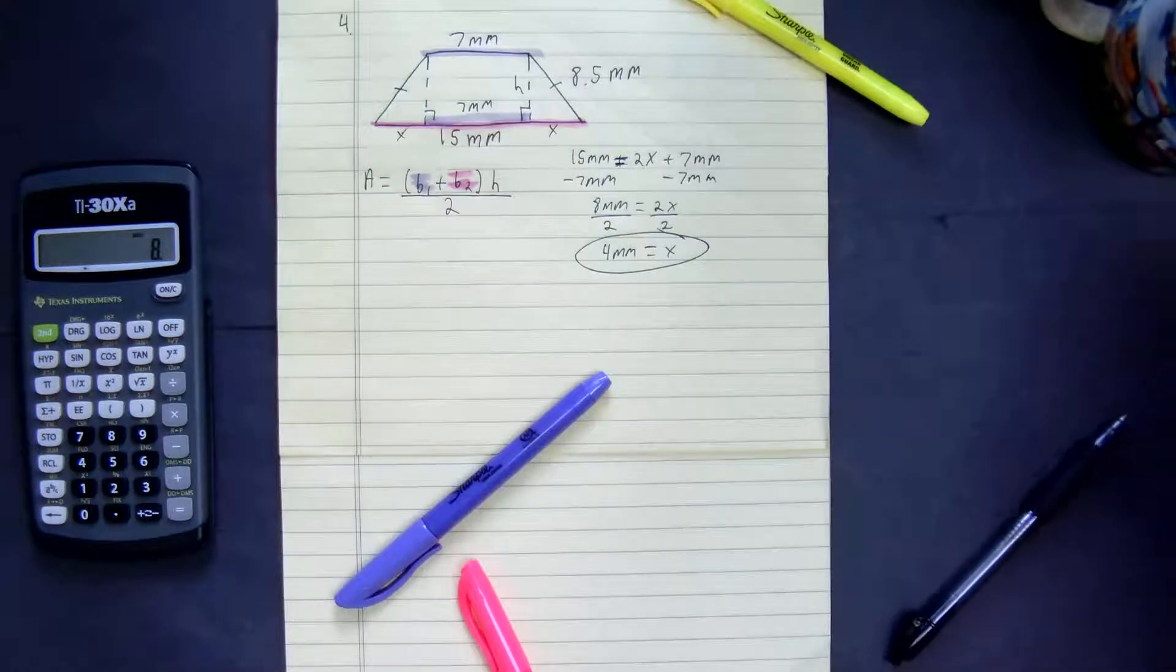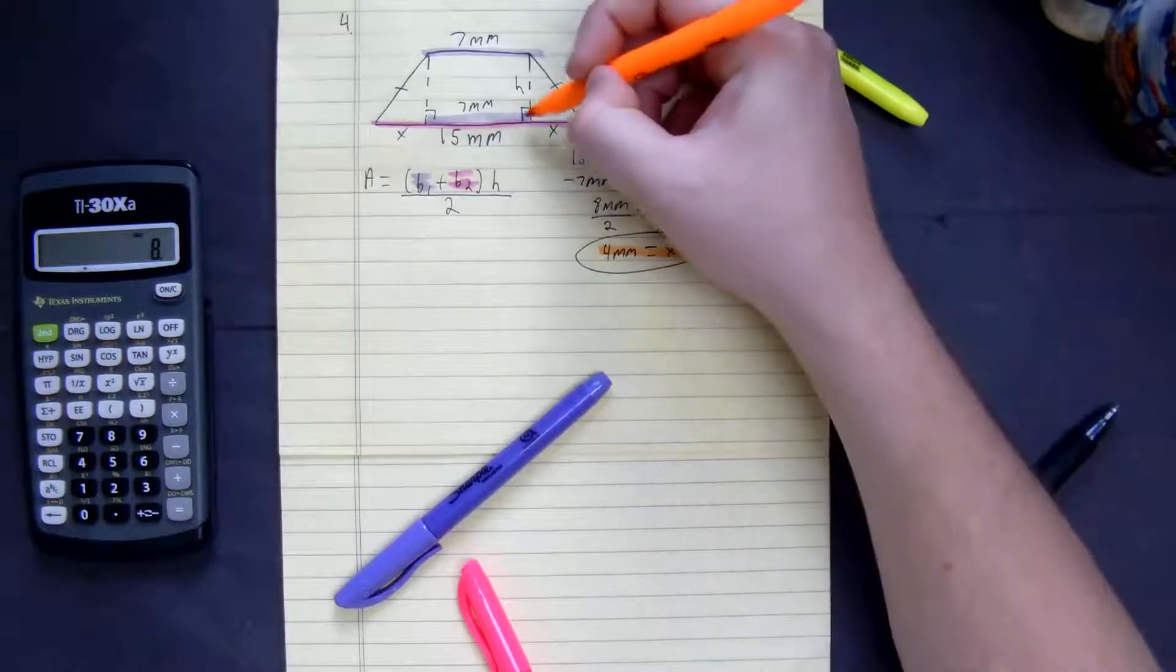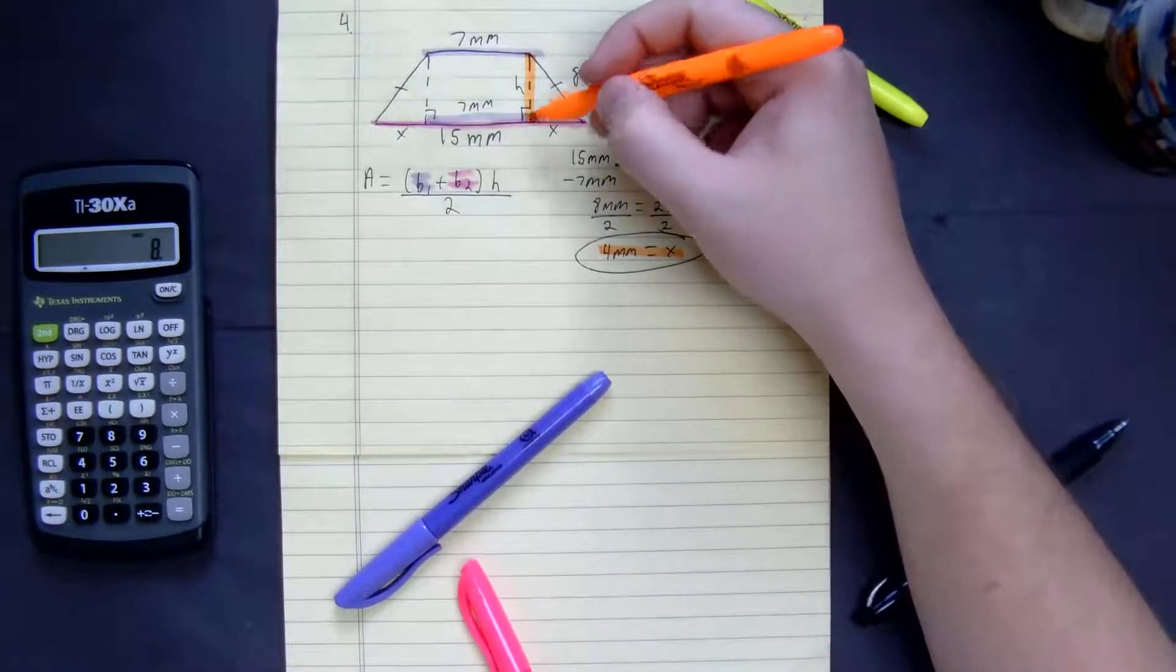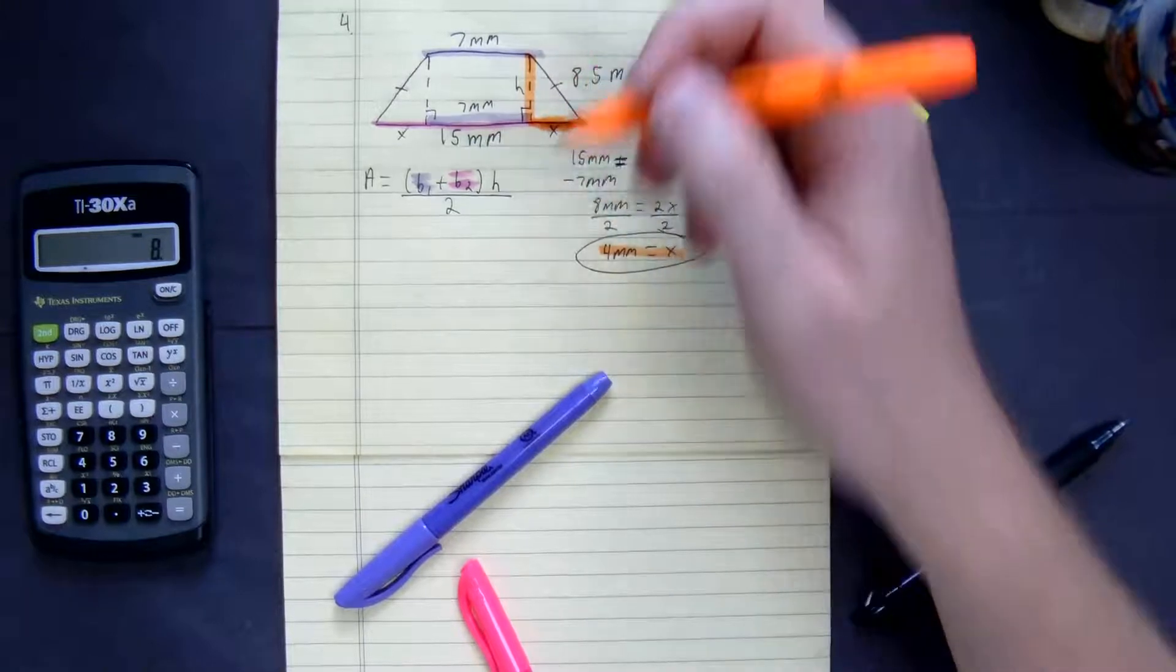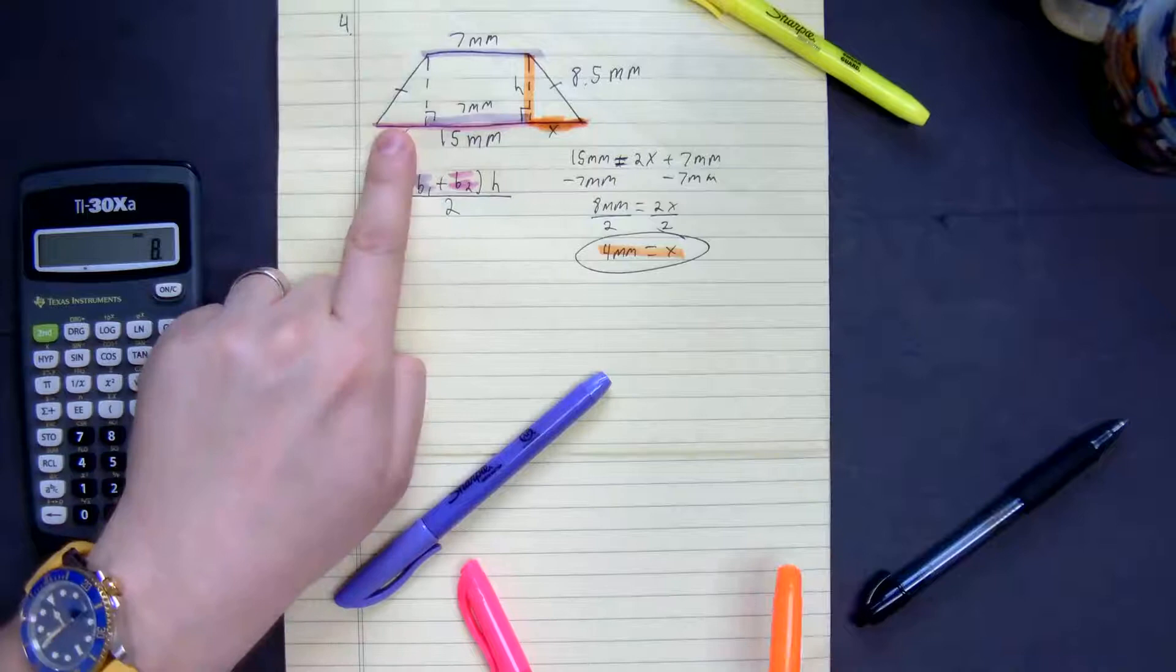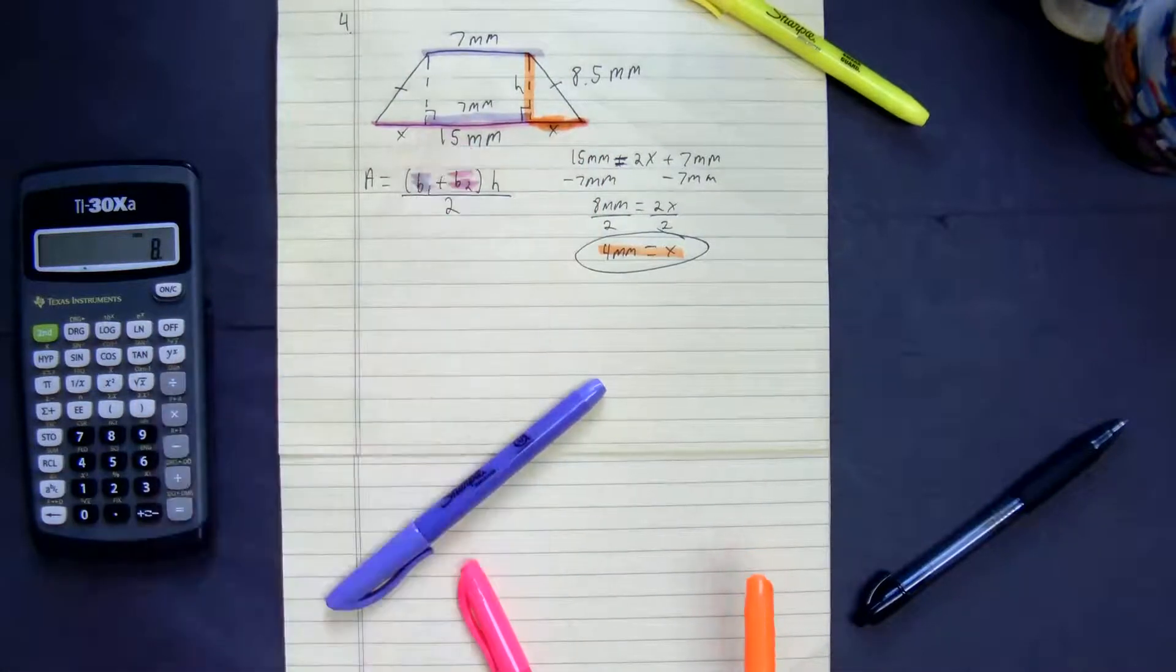So the height would represent here. The height would represent that x right there because 4 plus 7 plus 4 would give us 15 millimeters.